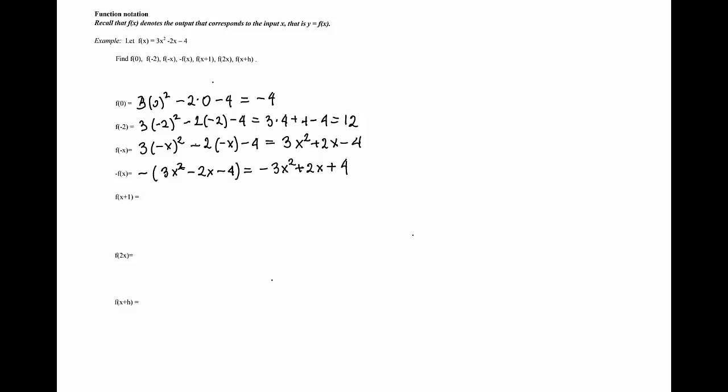Next, the input is x + 1 and we are to evaluate f at this input. So again, every x is replaced with x + 1. We have 3(x + 1)² - 2(x + 1) - 4. We can remove the parentheses and see whether we have like terms we can simplify.